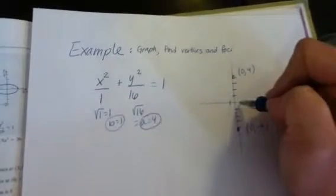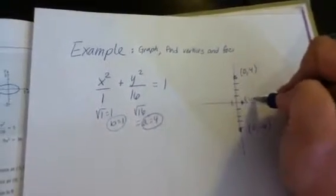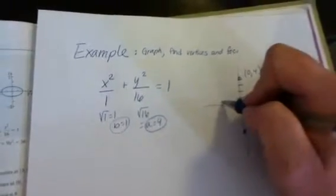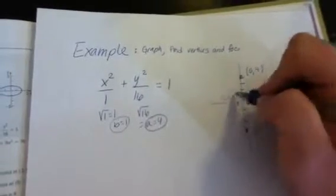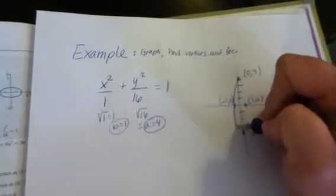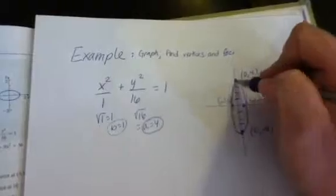And then in this direction, we're just going to go over to (1, 0) and to (-1, 0). So there's the graph. Whoops, I didn't quite connect it, but you get the idea.